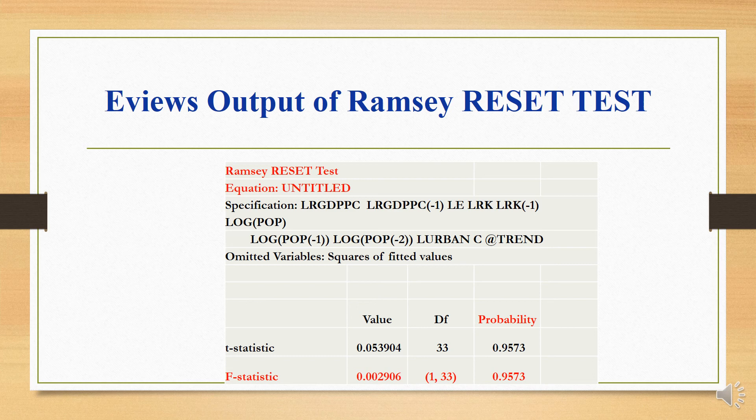Here is the EViews output of the Ramsey RESET test. Look at the F-test: the probability value of the F-test is 0.9573 and our null hypothesis is that the model is correctly specified. If the p-value obtained from the F-test is less than or equal to 0.05, we reject H0. Here we do not reject H0 because our p-value is greater than 0.05, which means our model is correctly specified.